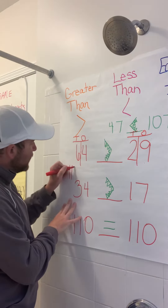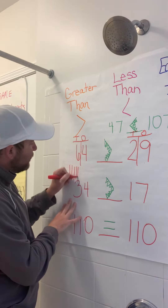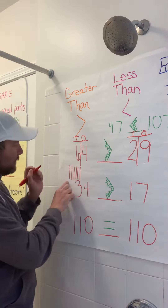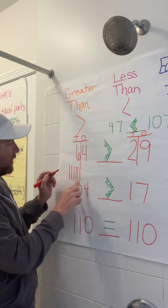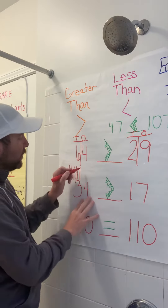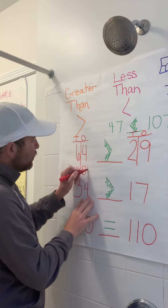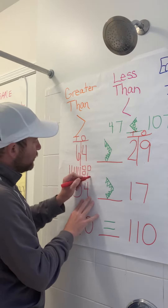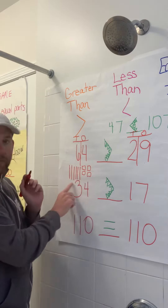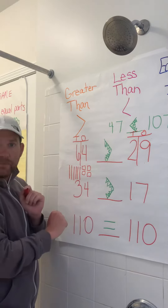So counting the rods: 10, 20, 30, 40, 50, 60. And then I drew 4 ones — 4 units: 1, 2, 3, 4. That represents 64.